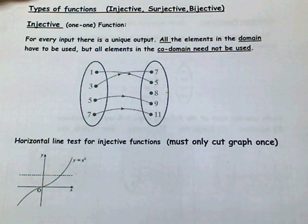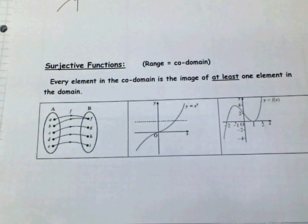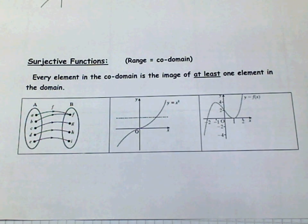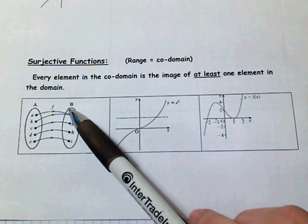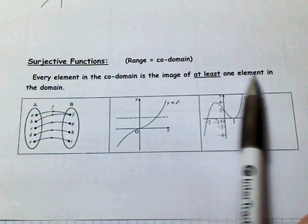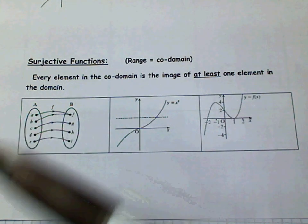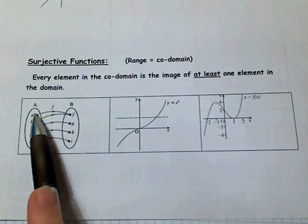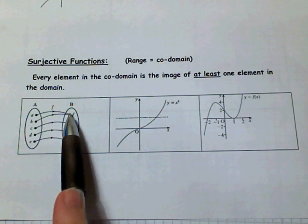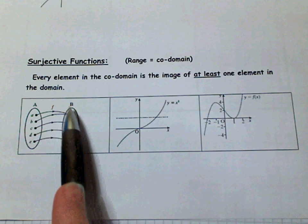The next type of function is a surjective function. For a surjective function, every element in the co-domain — here's our co-domain — is the image of at least one element in the domain. Look at the difference between it and the injective function. This is a surjective function: A goes to F, but B can also go to F. They don't exactly have to have unique outputs.